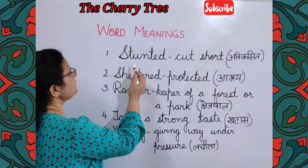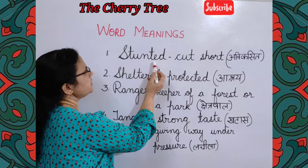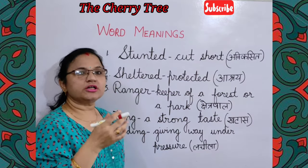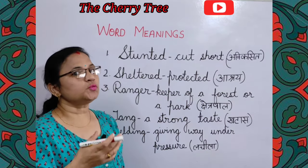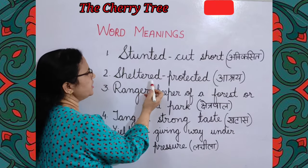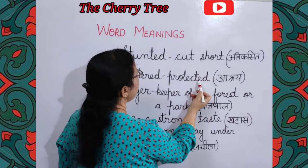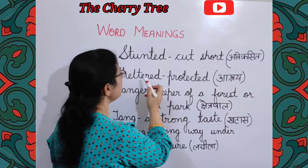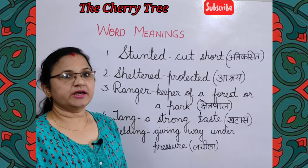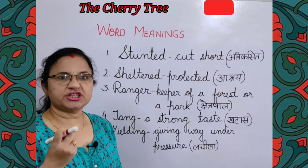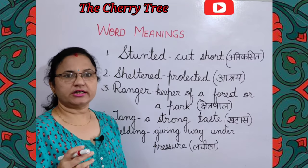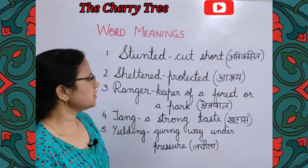First word is 'stunted'. Stunted means cut short — jiski growth puri na hui ho. Next is 'sheltered'. Sheltered means protected — surakshit. In this chapter the meaning of sheltered is protected.